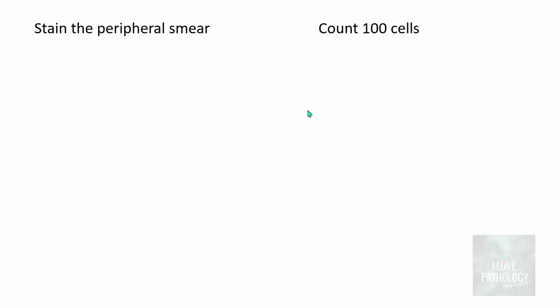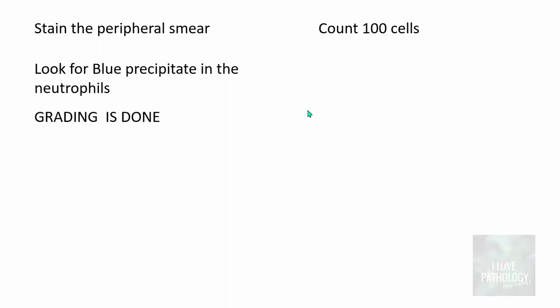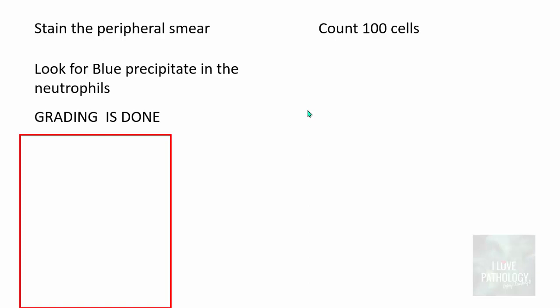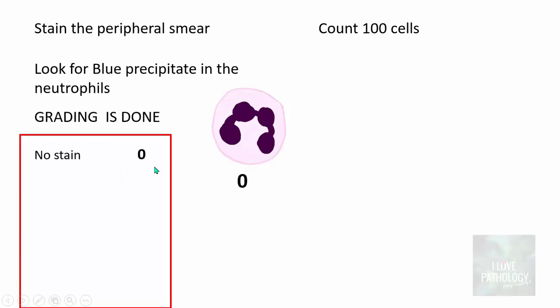With this principle, we stain the peripheral smear and count 100 cells. We look for the blue precipitate in the neutrophils and grading is done. If you don't see any precipitate — meaning absolutely no leukocyte alkaline phosphatase activity — you give a grade of 0.